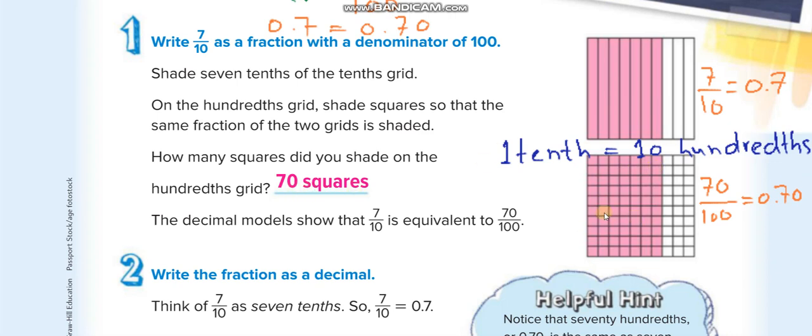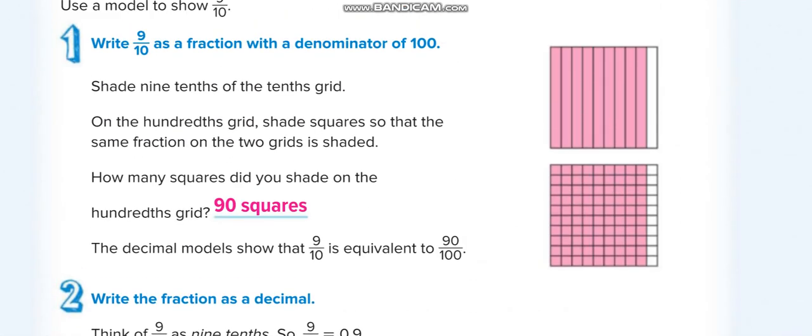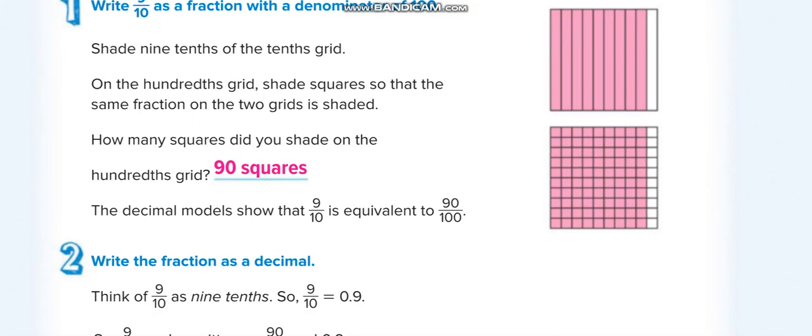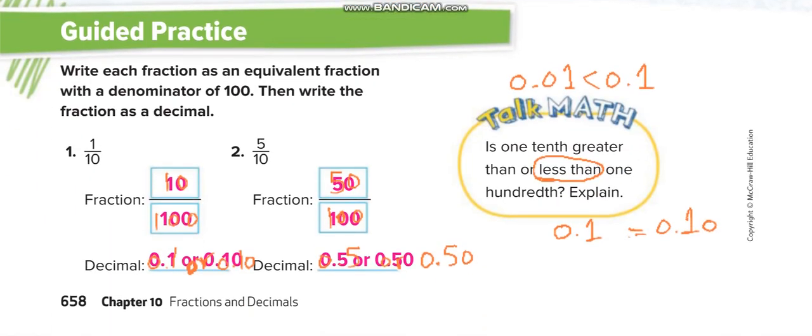Okay, next one. Here 9 over 10. Again, multiply by 10 up and 10 down. It will become 90 out of 100. Here it is 9 over 10, this is 90 over 100. 9 tenths, 90 hundredths. Similarly, this one.